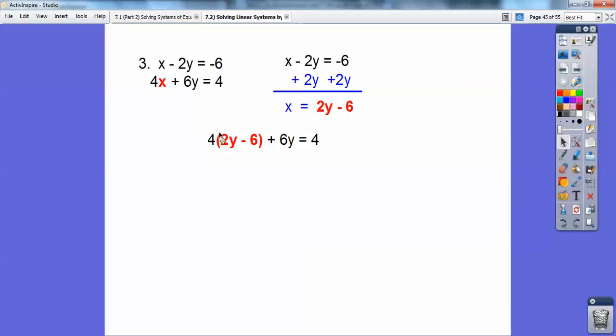Put this 4 through. 4 times 2Y, 4 times 6. So 4 times 2Y is 8Y. 4 times 6 is 24, so 8Y minus 24. Then I'm going to combine those like terms. 8Y and 6Y is 14Y minus 24 equals 6. Now we're going to add 24 to both sides. You get 28. So 14 goes into 28 two times, and then this time Y equals 2.